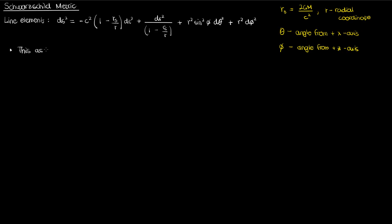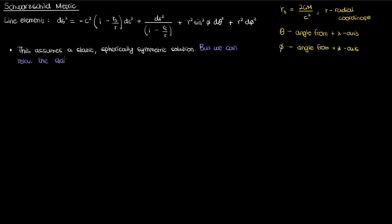One of the core assumptions we made in deriving the solution is that it was a static spherically symmetric solution. In this video I'm going to show you that we can actually relax that static assumption and still obtain the Schwarzschild metric as the solution for a spherically symmetric spacetime.